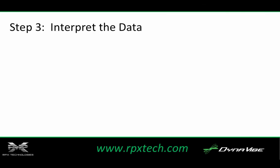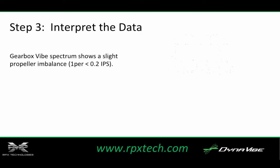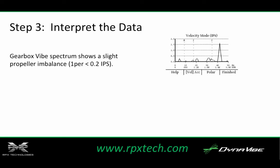Step 3 is to interpret the data. After you've collected your vibration data, first review the velocity mode graph generated by the accelerometer on the gearbox. If the prop is out of balance, it will show the presence of a vibration that occurs once per prop rotation, or what is called a 1-per vibration.